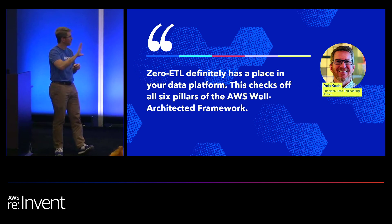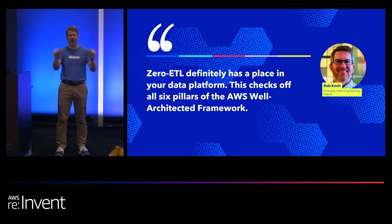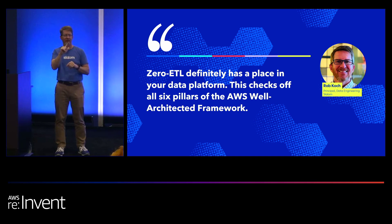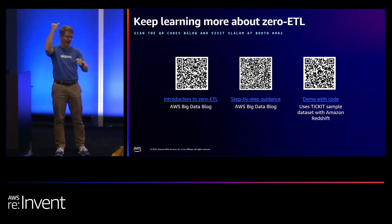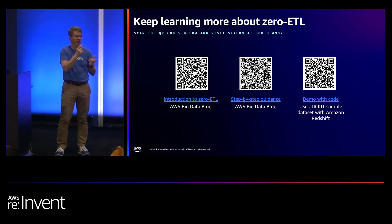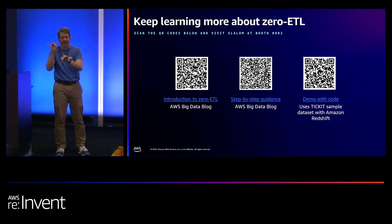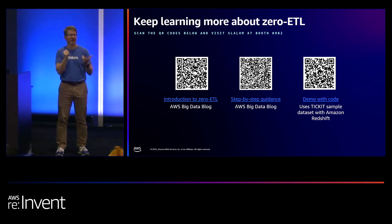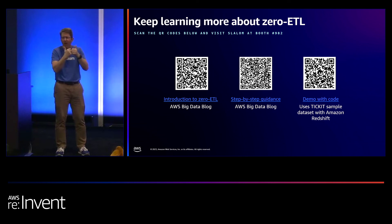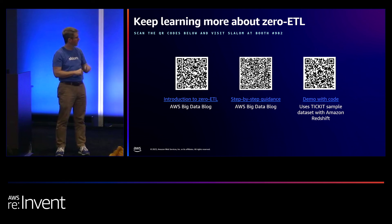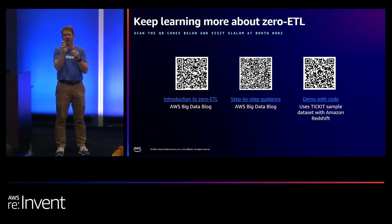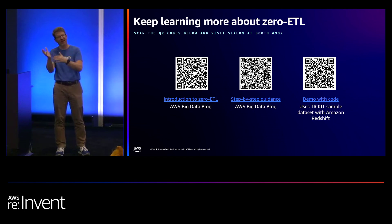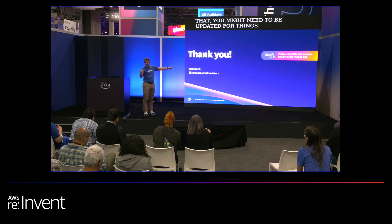My quote: Zero ETL definitely has a place in your data platform. This checks off all six pillars of the AWS Well-Architected Framework — your operations, security, sustainability, and all the other pillars. It covers all of them. On the last slide: if you wanted to see the resources I gathered, from the preview announcements to playing around with it — I have QR codes with links. There's also step-by-step guidance. Some older versions of the software on Cloud Shell may need to be updated for things to go smoothly. Thank you so much for coming. There's a LinkedIn profile link here, and if you don't mind filling out the survey, I would appreciate the feedback.